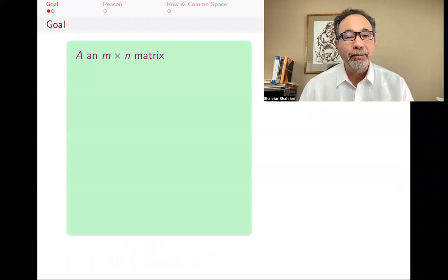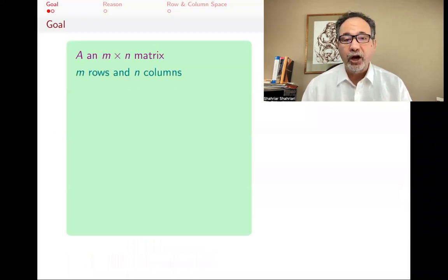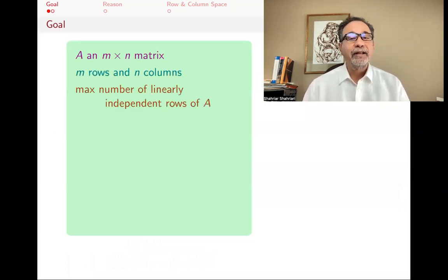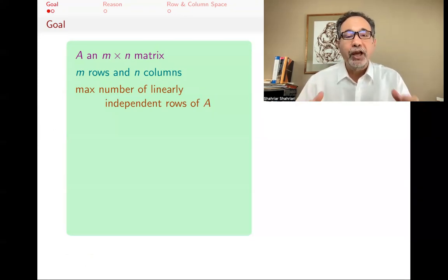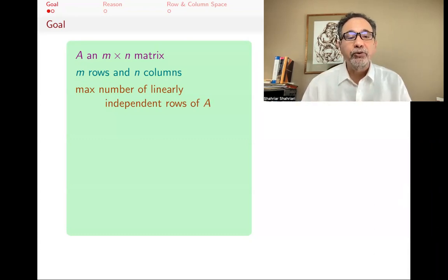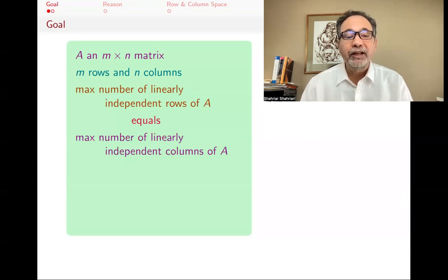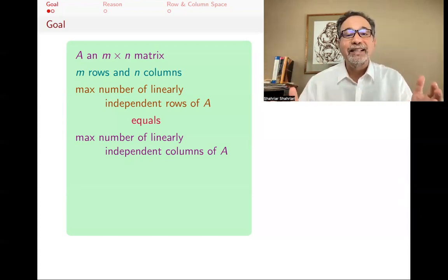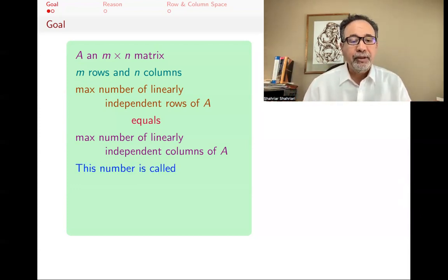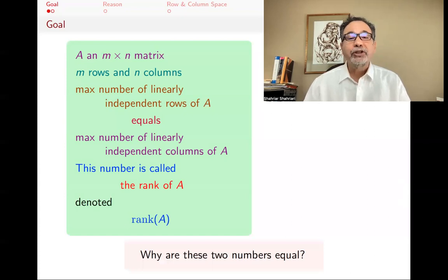Let's say A is an m by n matrix — a matrix that has m rows and n columns. We look at the maximum number of linearly independent rows of A that we can find. That number happens to always be equal to the maximum number of linearly independent columns of A. This number is called the rank of A, denoted by rank A.